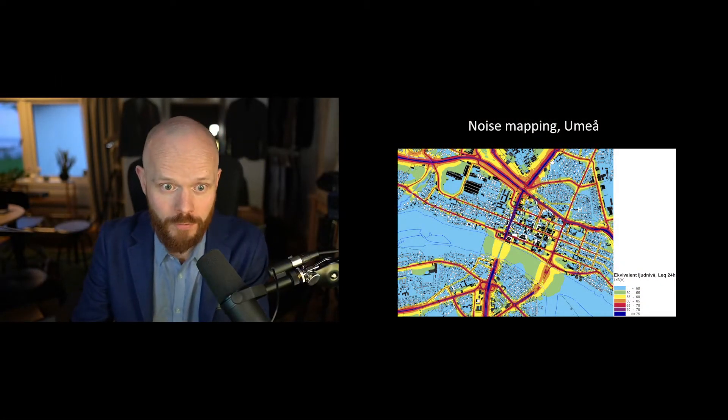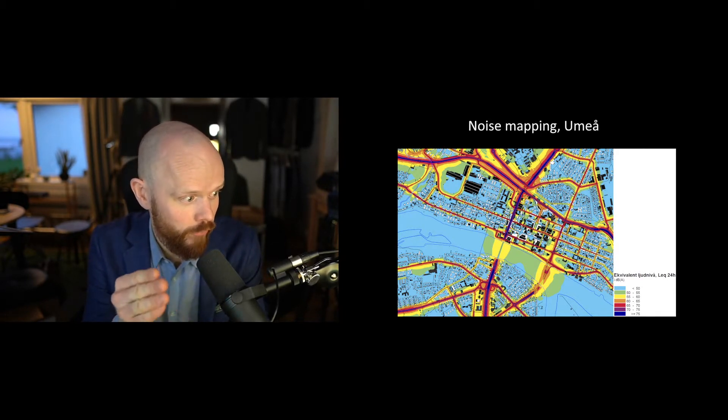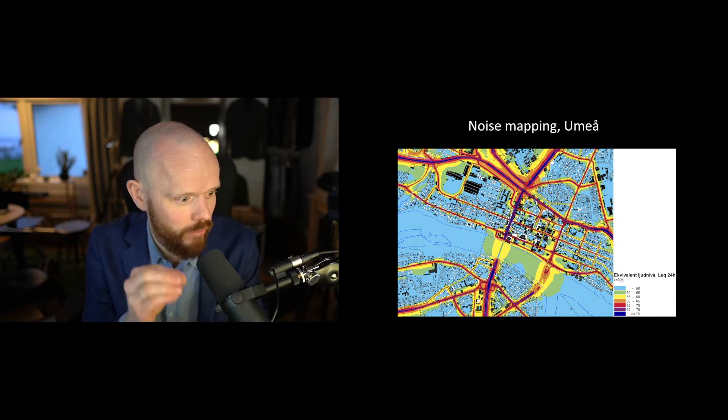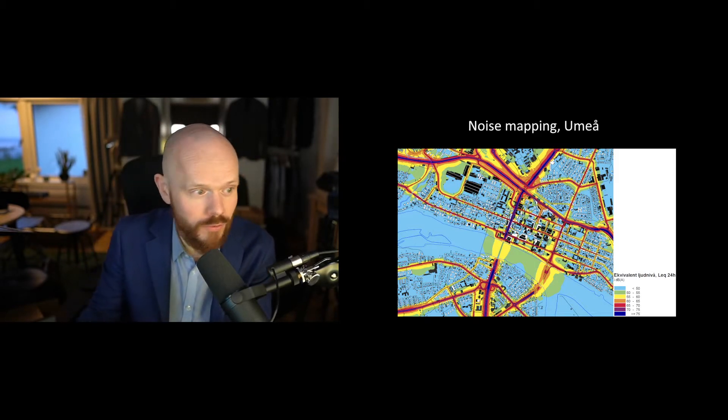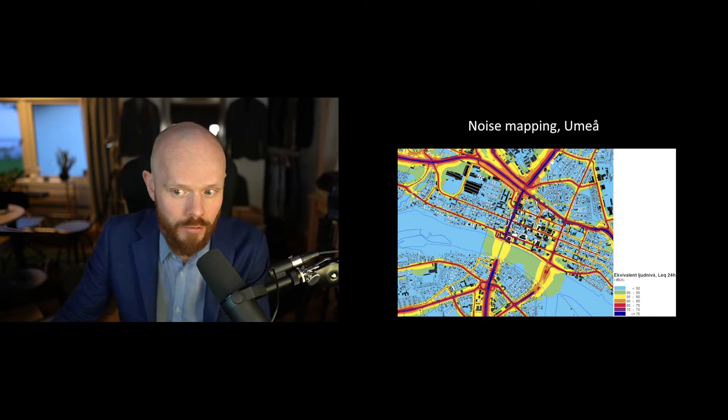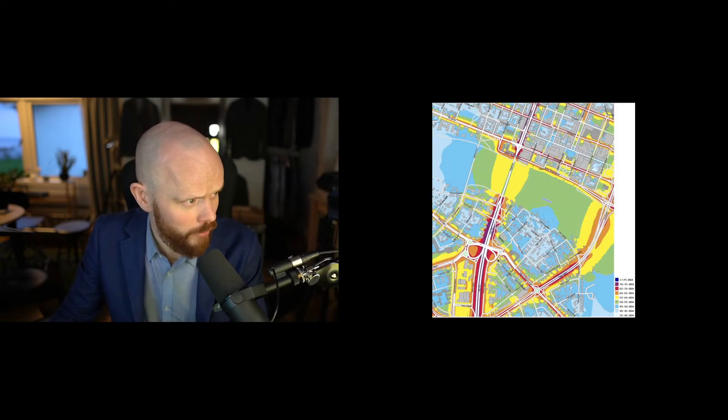This is my hometown Umeå, and this is a noise mapping of my hometown. In this graph you can see roads—the heavier traffic roads get into this purple-bluish color. You can really see where the most cars are driving, and then you can see quiet zones. Here you see what kind of sound levels we're talking about, so it's equivalent.